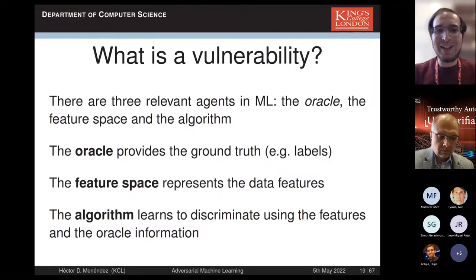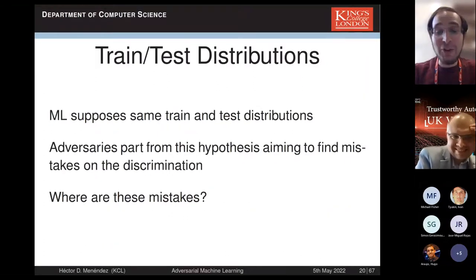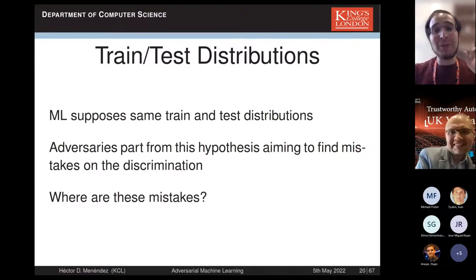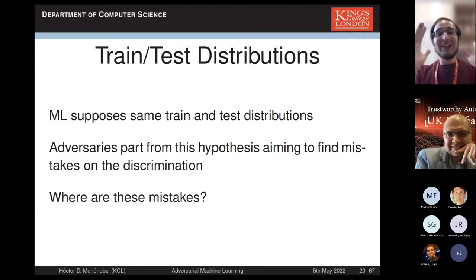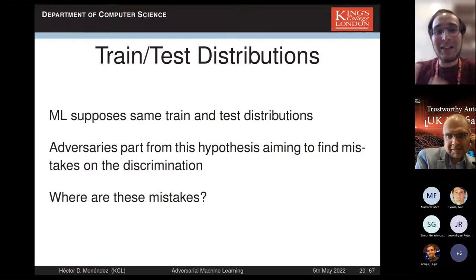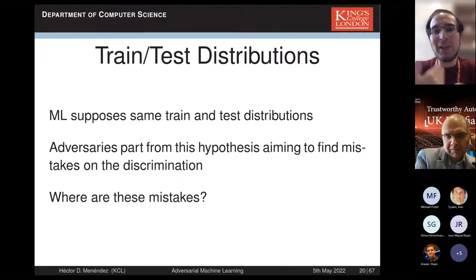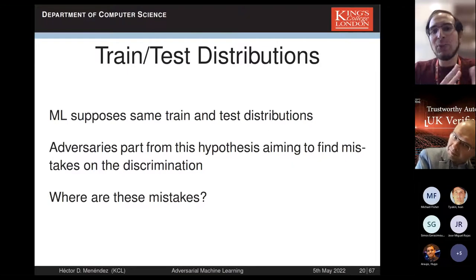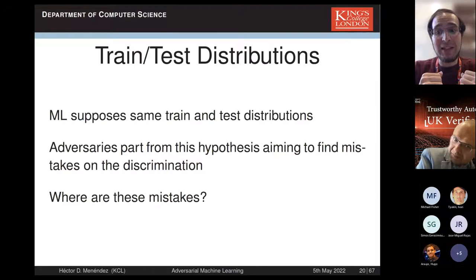This works because machine learning has an assumption that is not necessarily true: that the training data and the test data follow the same distribution. When you have an adversary, that's not necessarily true. The adversary will try to change the new data to ensure the distribution is different from the training data, and that is what makes the attack feasible.